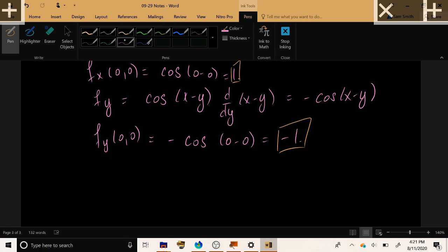Now let's go ahead and fill in the blanks of our tangent plane equation. z equals z naught, which was 0, plus f sub x with the point plugged in, which is 1, times x minus the x of our given point, plus f sub y at 0, 0, y minus the y of our given point.